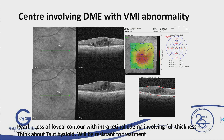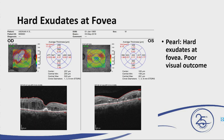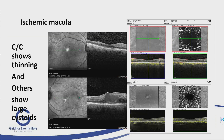You also need to look for hard exudate clumps — if there is a hard exudate clump in the center, the visual outcome may not be very good. Another thing: if the vision is out of proportion to the clinical findings, think about ischemic macula. This is where OCTA is useful — OCTA shows an irregular foveal avascular zone, which is important, and the outcome may be a little worse.